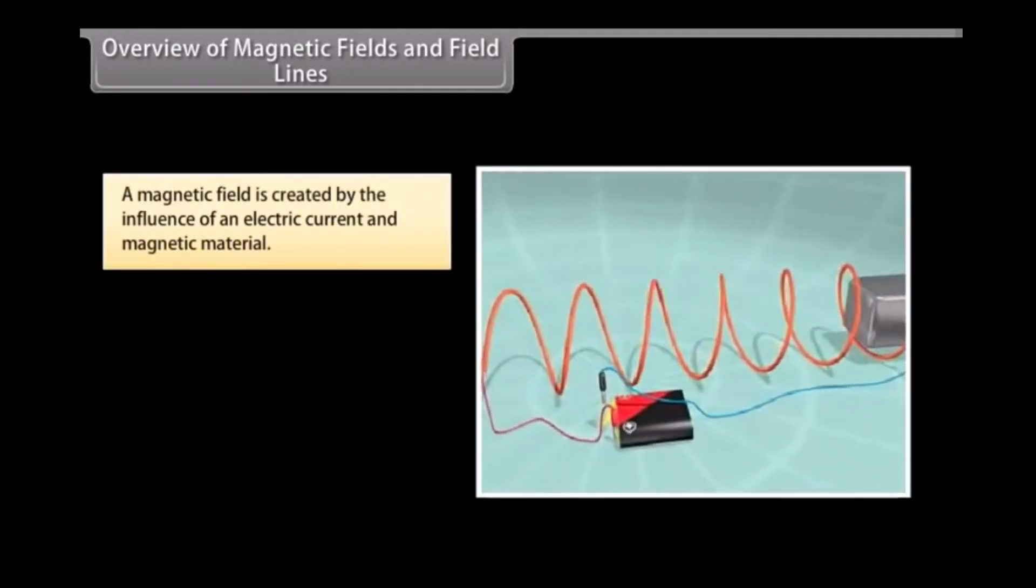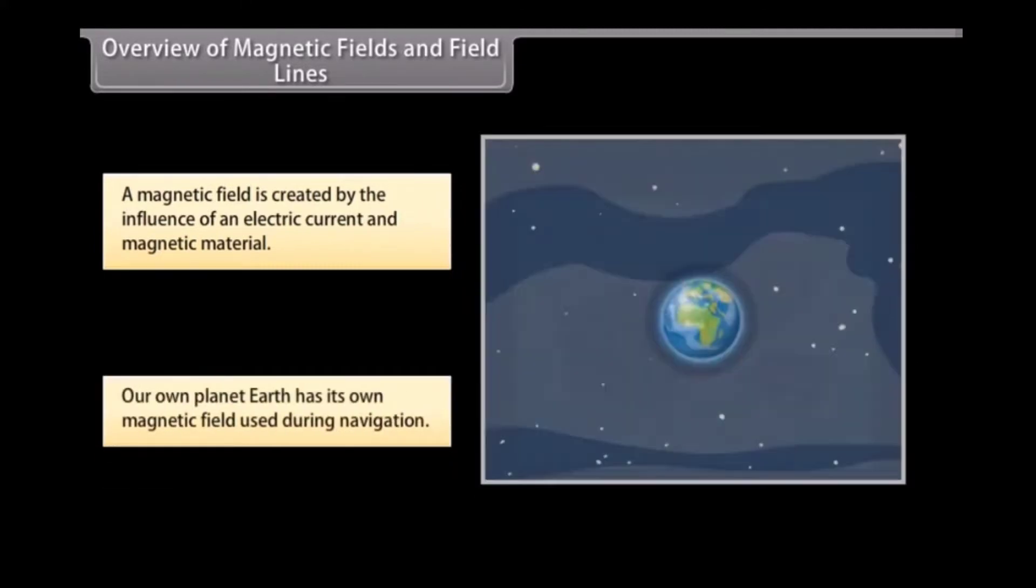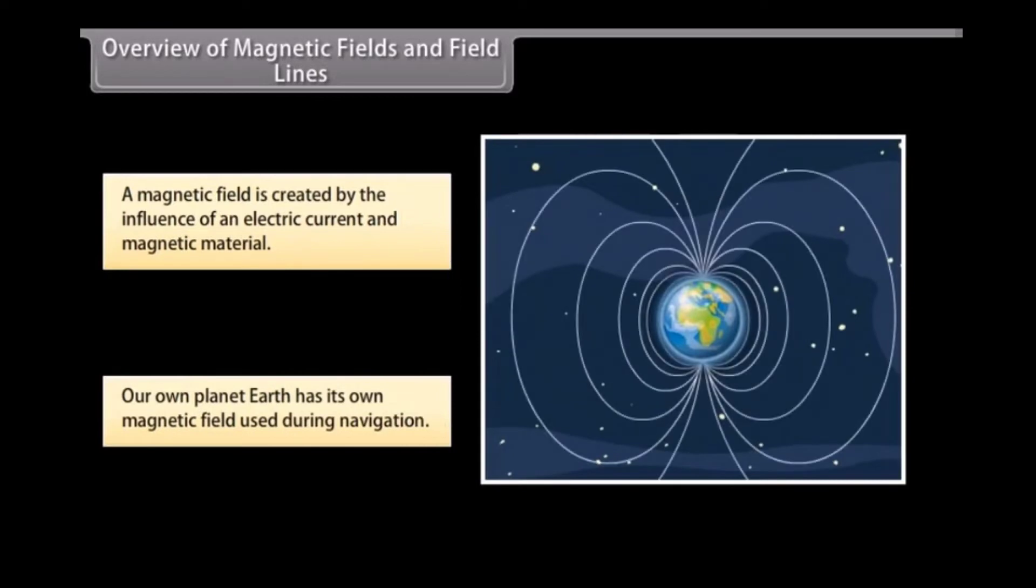Overview of magnetic fields and field lines. A magnetic field is created by the magnetic influence of an electric current and magnetic material. Our planet Earth produces its own magnetic field, which is an important factor during navigation.